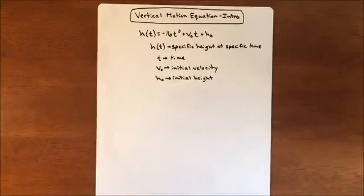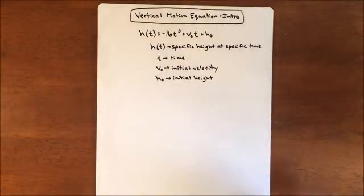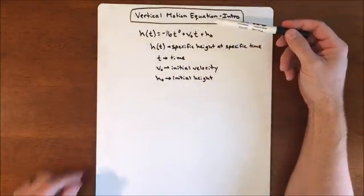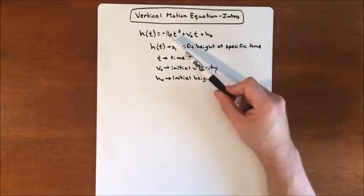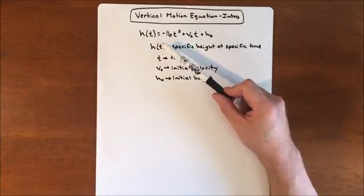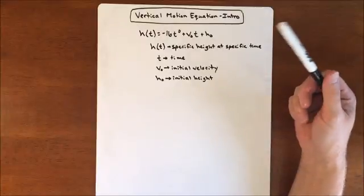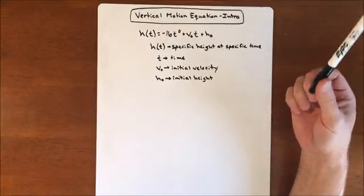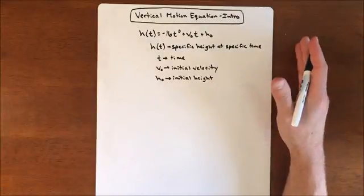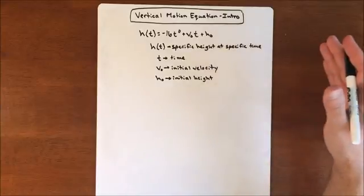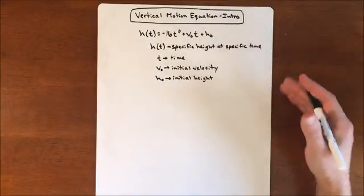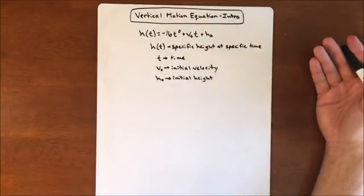In this lesson, we're going to begin to talk about the vertical motion equation. The vertical motion equation is a quadratic that involves gravity, an initial velocity, and an initial height. It basically calculates where an object is after a specific time, how long it takes to hit the ground, or what the maximum height an object will reach.